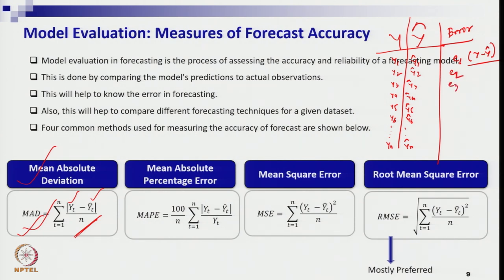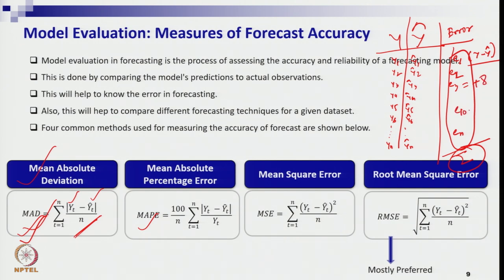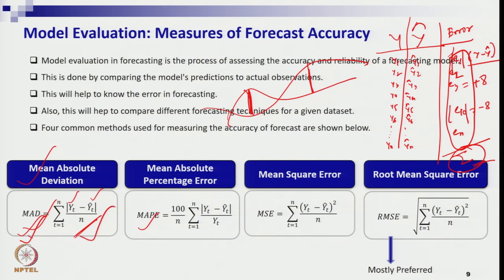If you calculate the error term and then compute MAD — Mean Absolute Deviation — this gives you the accuracy level of the model. Taking a simple average of errors may not be good because positive and negative errors cancel out. For example, +8 and -8 sum to zero, but there is clearly deviation from actual data. Therefore we take the absolute value of the error and then average it — that is Mean Absolute Deviation.